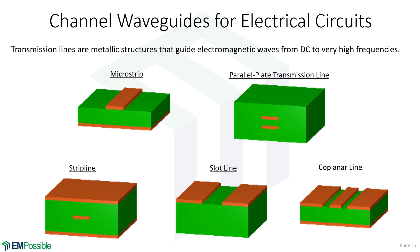Channel waveguides specifically for electric circuits — these are transmission lines and tend to be thought of as circuit elements. There's microstrip, where there's a ground plane on the back of the circuit substrate and the signal traces form the waveguide. There's a parallel plate transmission line, a stripline which is a microstrip embedded between layers, a slot line where the field establishes itself between two conductors, and a coplanar line with a signal line and two ground conductors on either side. These are all very common kinds of transmission lines.